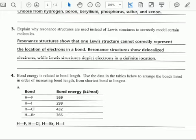they don't give us bond length in the table. They give us bond energy. And so what we need to identify is that bond energy and bond length have an inverse proportionality, an inverse relationship.